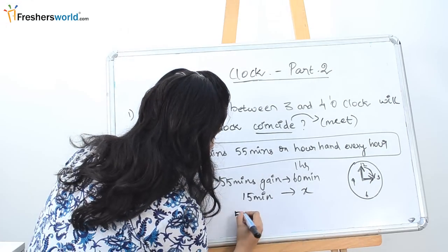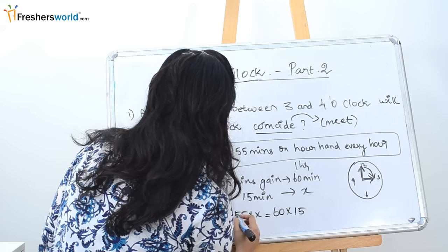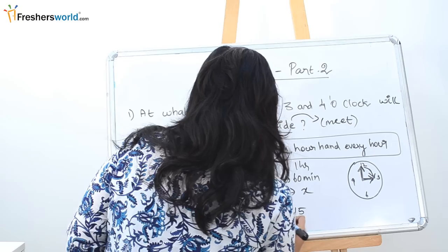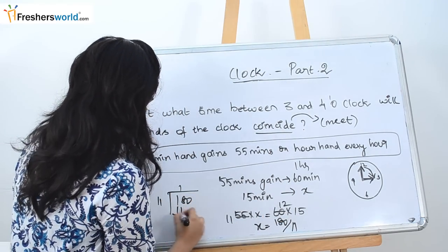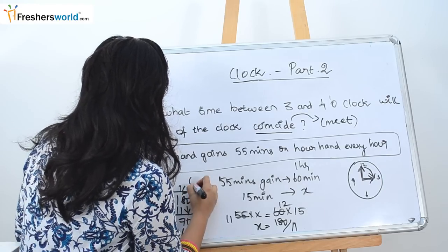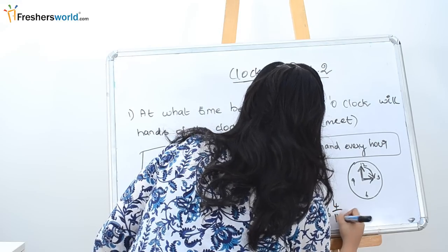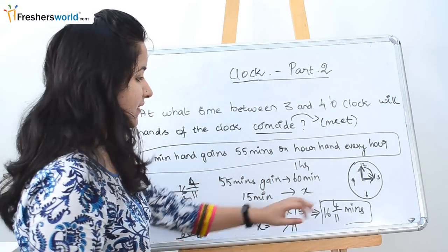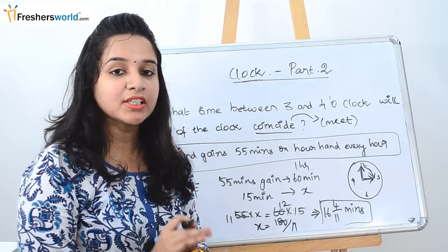Just cross-multiply: 55 times x equals 60 times 15. Solving this gives x equal to 900 divided by 55, which is 180 divided by 11, which equals 16 and 4/11 minutes. So at 16 and 4/11 minutes past 3 o'clock, the minute hand and the hour hand will coincide between 3 o'clock and 4 o'clock.